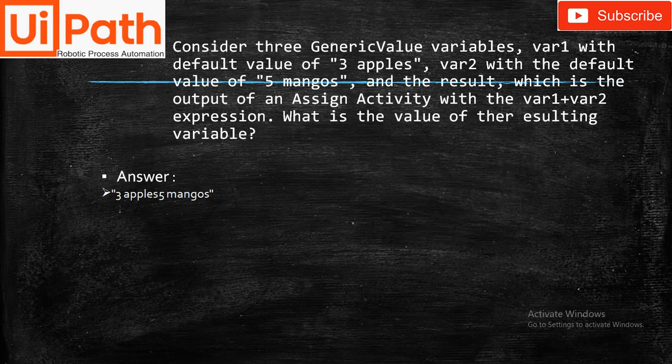Consider three generic value variables: var1 with default value 'three apples', var2 with default value 'five mangoes', and a result variable which is the output of an Assign activity with the expression var1 plus var2. What is the value of the result variable? Answer: 'three apples five mangoes'.